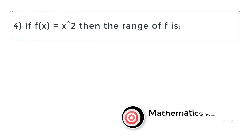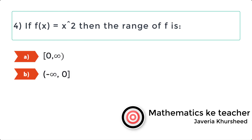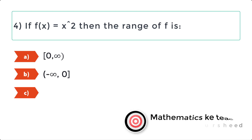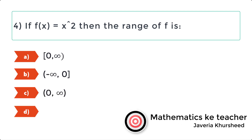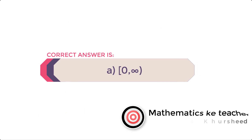For f(x) = x², then the range of f is: a) closed interval from 0 to infinity, b) closed interval from minus infinity to 0, c) open interval from 0 to infinity, d) none of these. Correct option is a) closed interval from 0 to infinity.